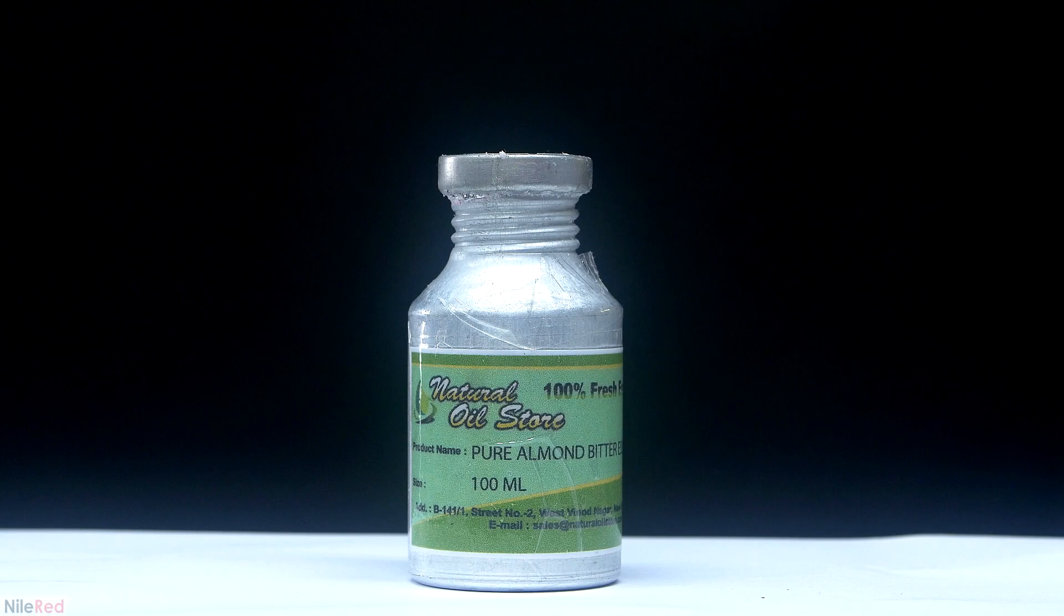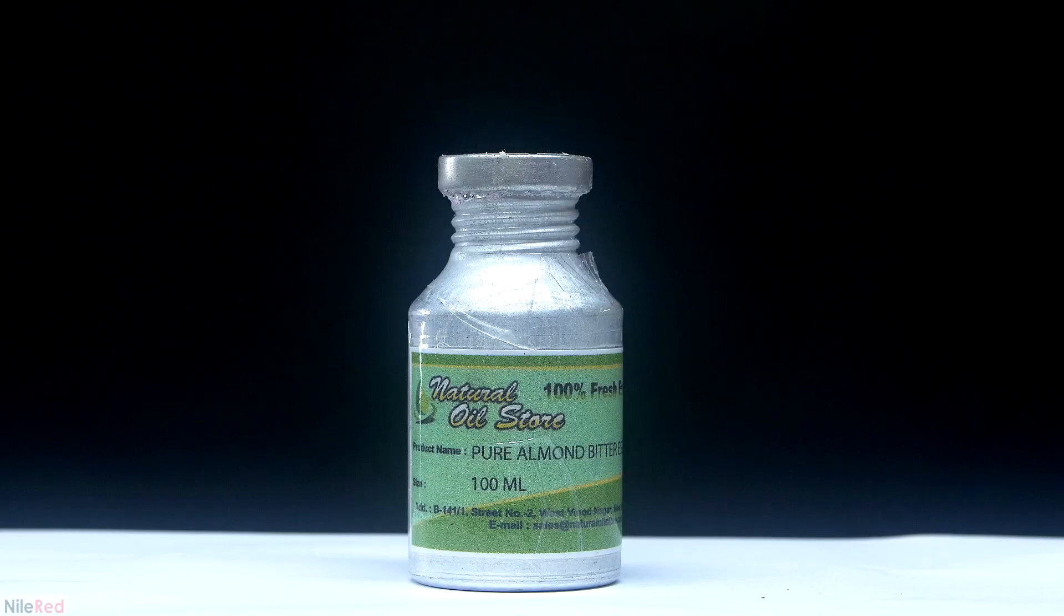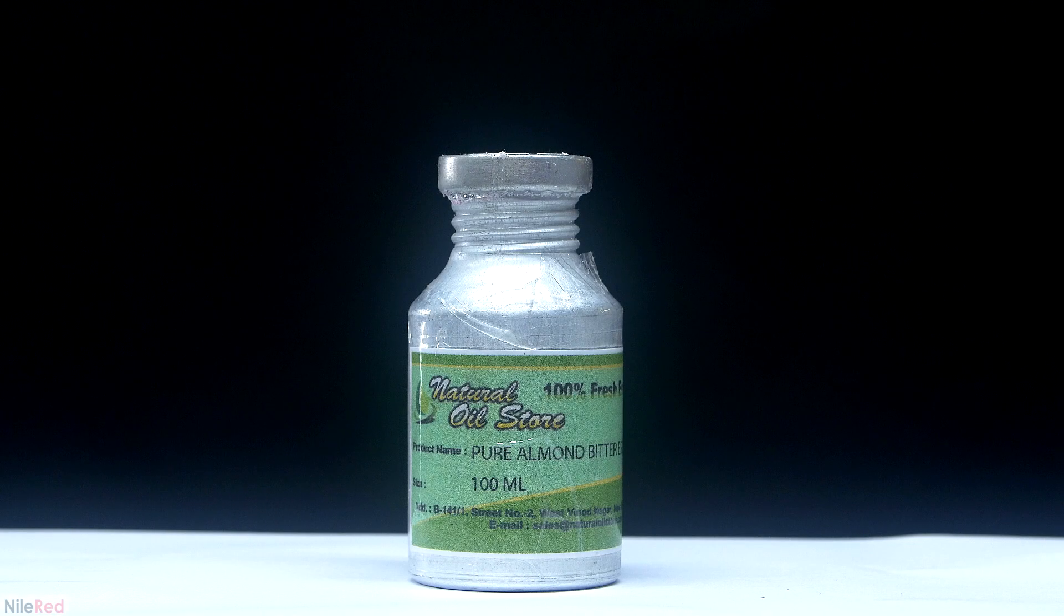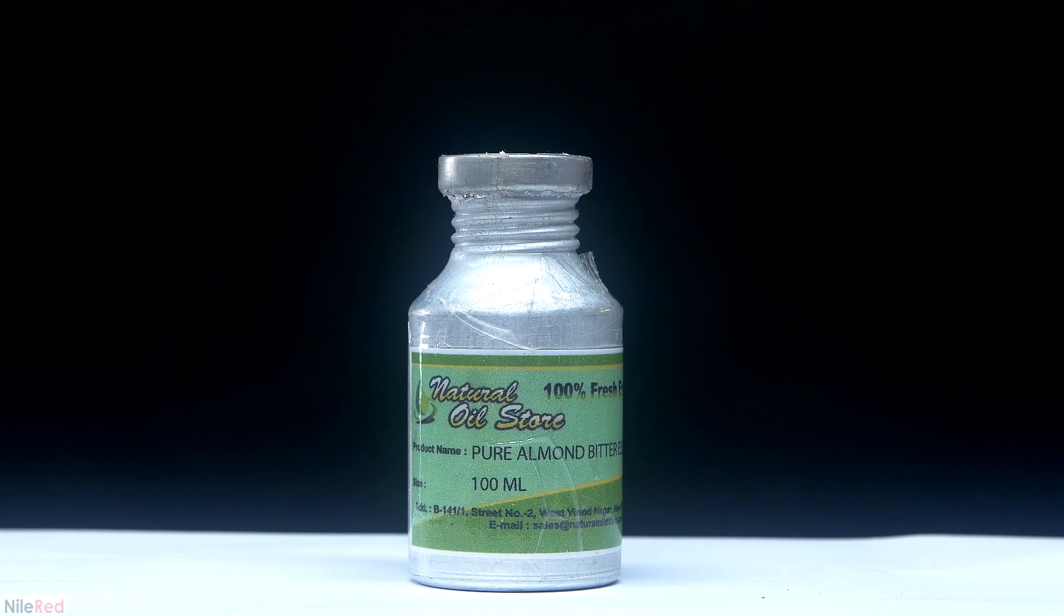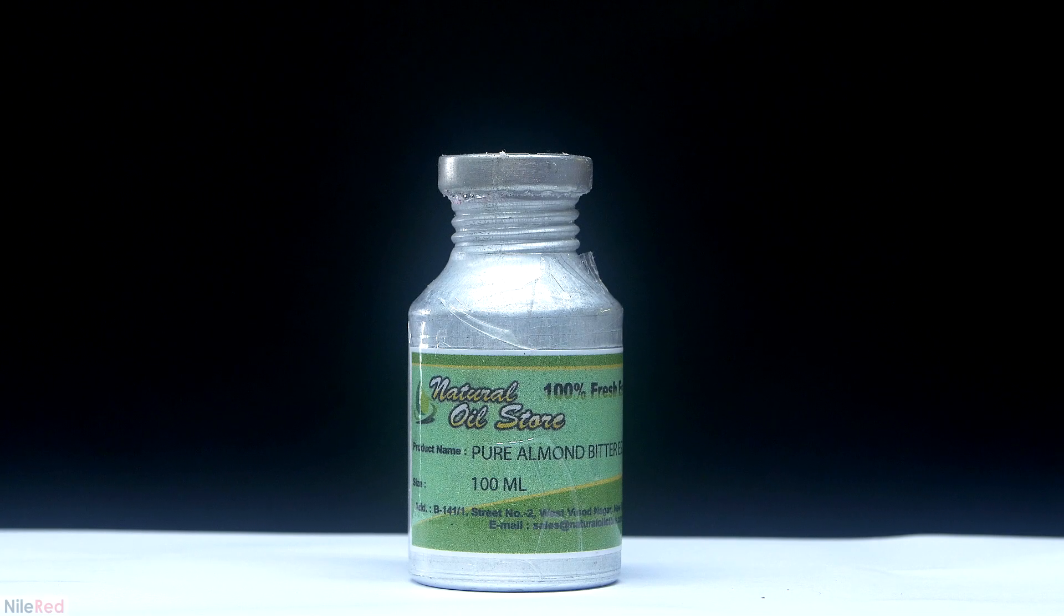Here I have some bitter almond oil that I got from eBay for about $40. Although the bottle does contain 100 milliliters, I'm only going to be using 70 for this video. I got it from eBay because this was the easiest source for me, but it doesn't really matter where you get it from. You just want it to be as pure as possible.